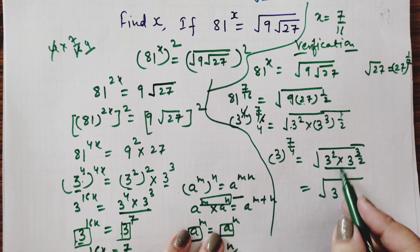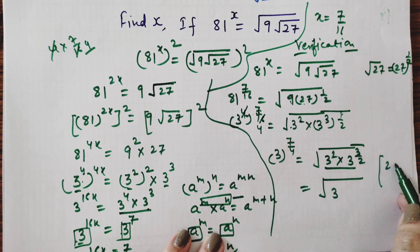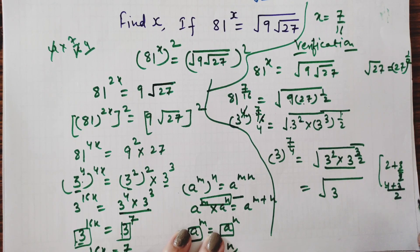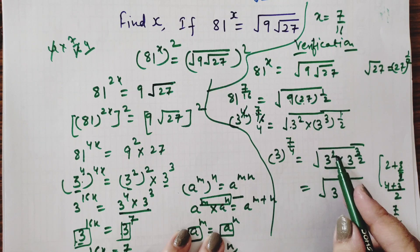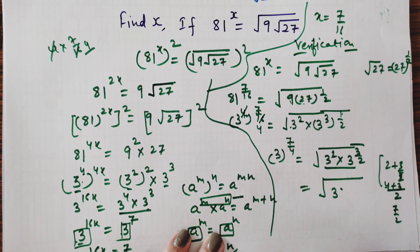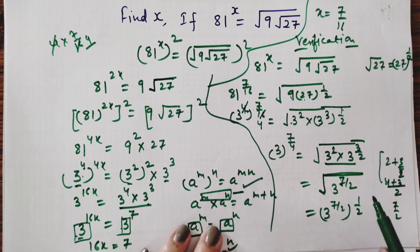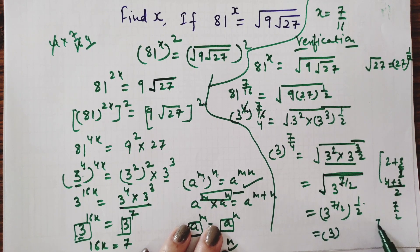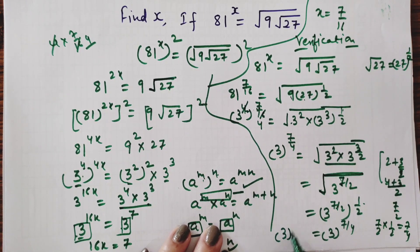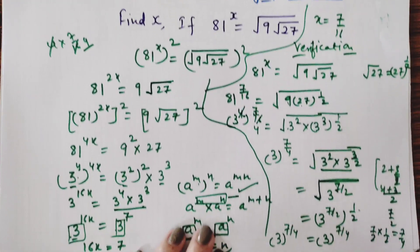Now the bases are the same on the right-hand side, so the powers should be added: 2 plus 3 by 2. Taking LCM of 2: that is 4 plus 3 over 2, which equals 7 by 2. Now we apply the root, which is 1 by 2. Using the law a^m whole power n: 3 power 7 by 2 multiplied by 1 by 2 gives 3 power 7 by 4. And the right-hand side is already 3 power 7 by 4. So our verification is also done.